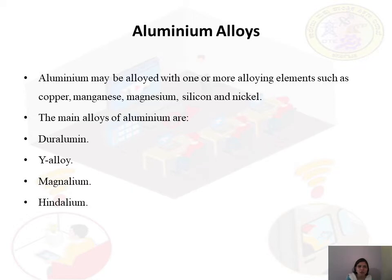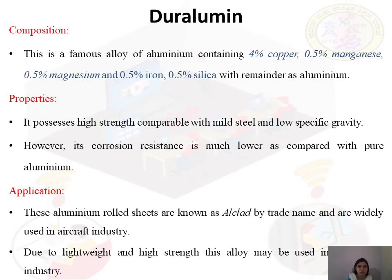The four types of aluminium alloys are: Duralumin, Y Alloy, Magnelium, and Hindelium. Their properties are almost similar: they are light in weight with less density, high strength compared to pure aluminium, high ductility, high electrical conductivity, and high resistance to corrosion.